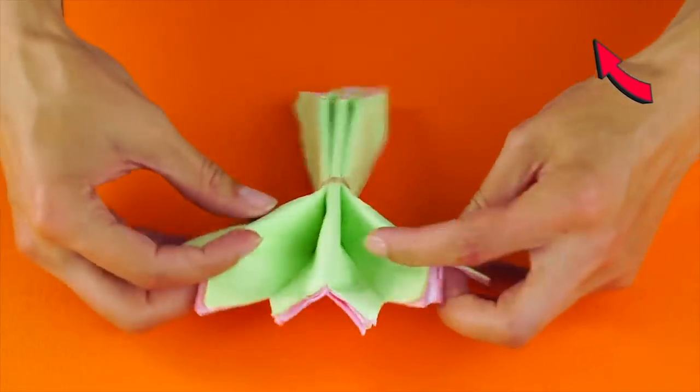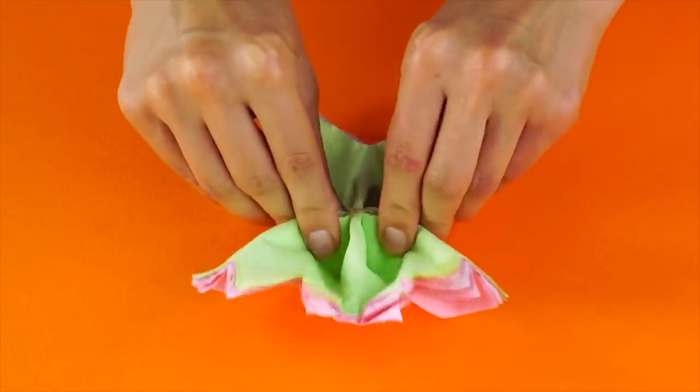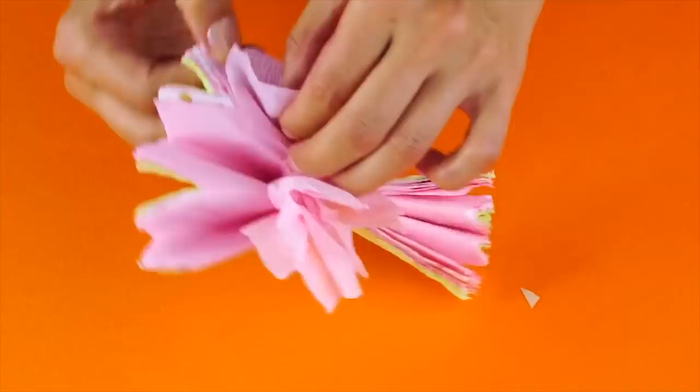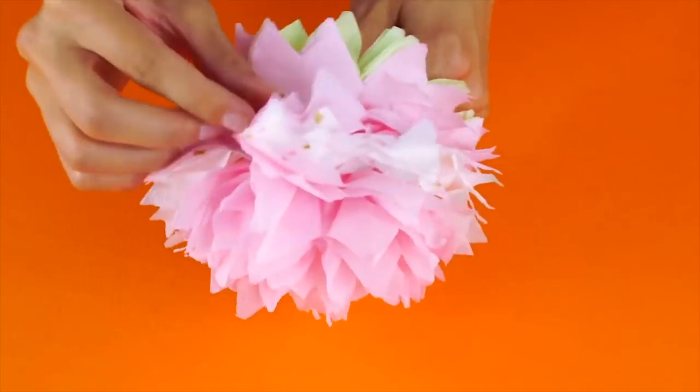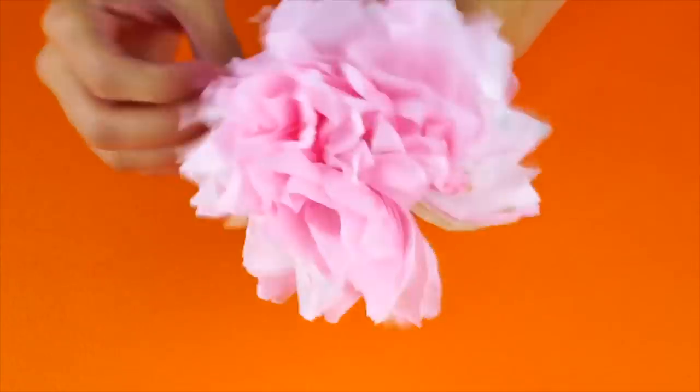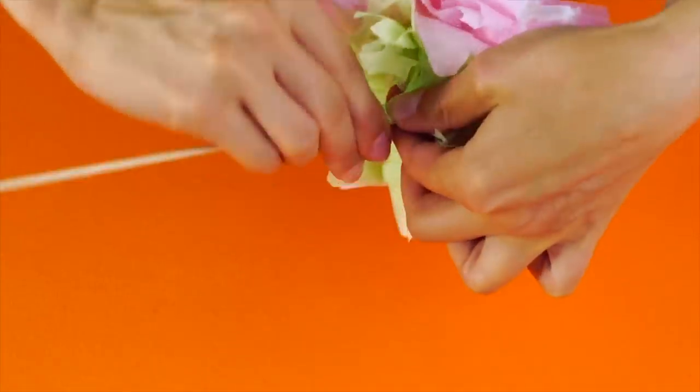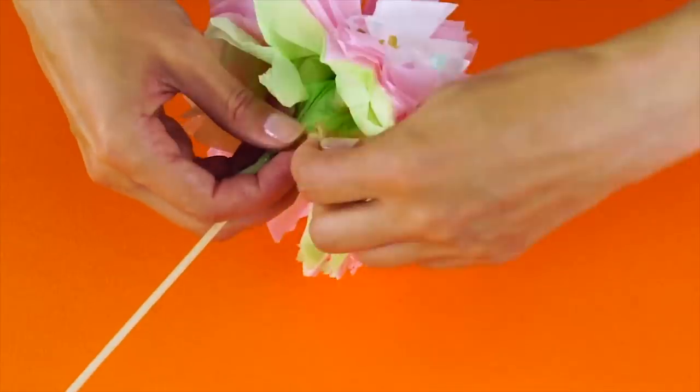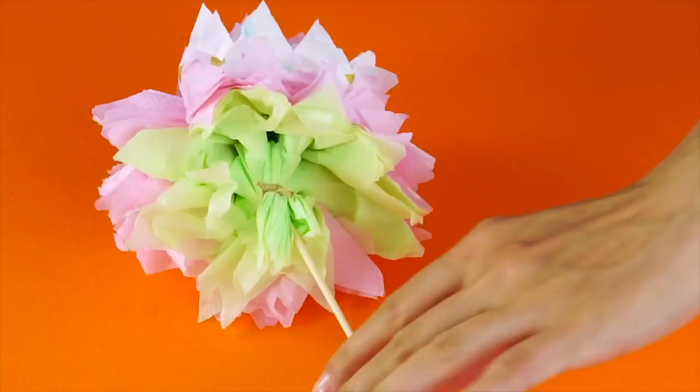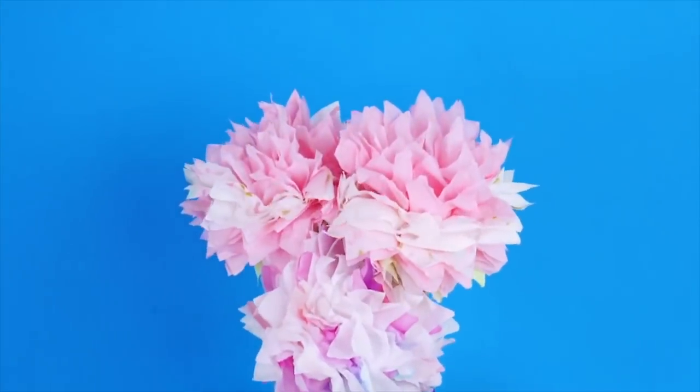You can add stems by taking a wooden dowel and twisting the bottom layers around the dowel before securing it with some twine. Look at these big paper peonies!